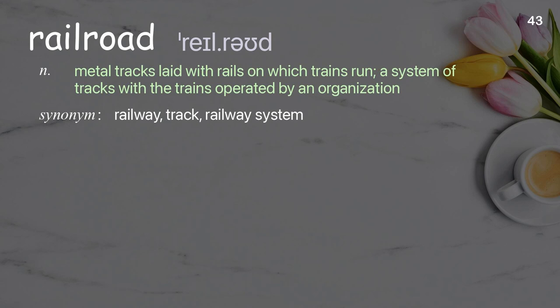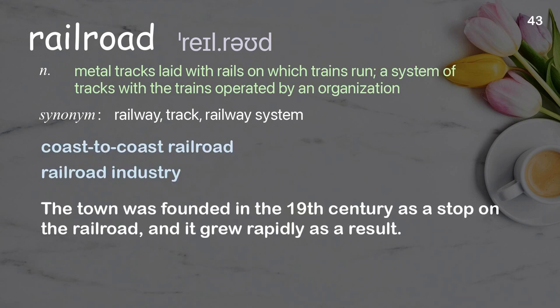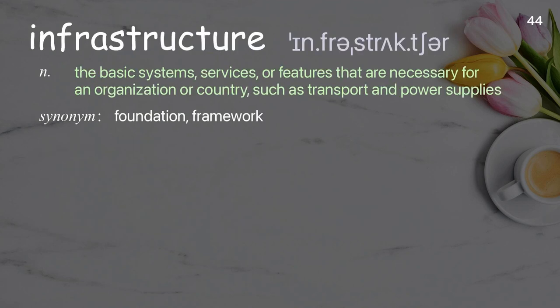Railroad: Metal tracks laid with rails on which trains run; a system of tracks with trains operated by an organization. Infrastructure: The basic systems, services, or features that are necessary for an organization or country, such as transport and power supplies.